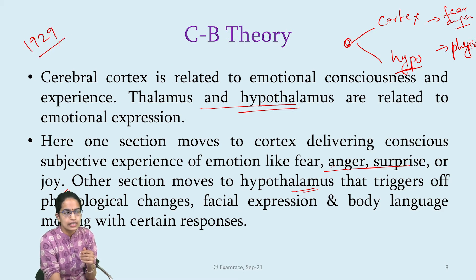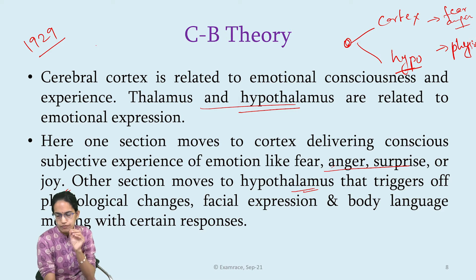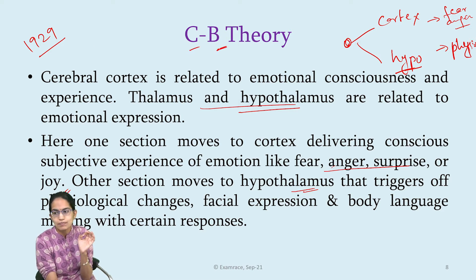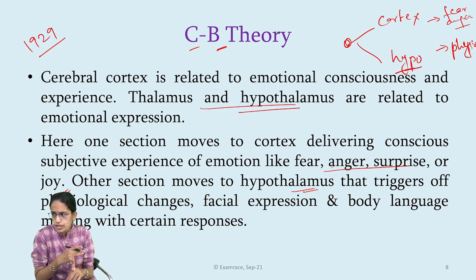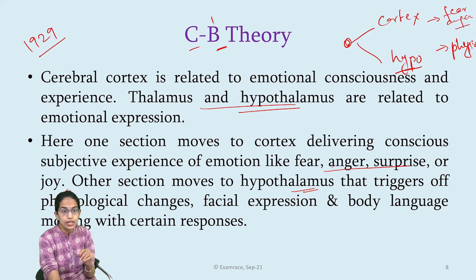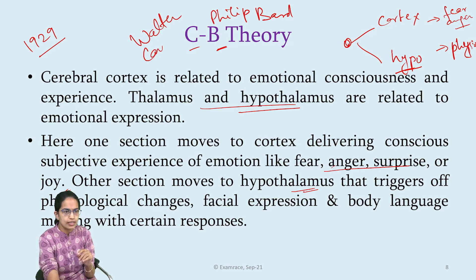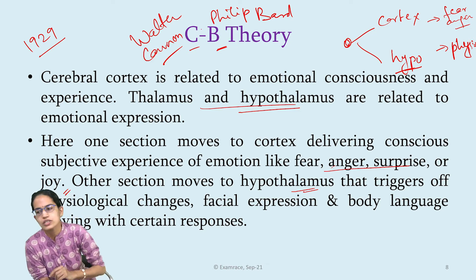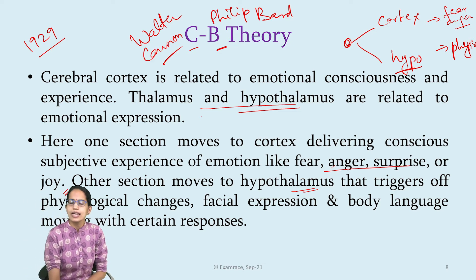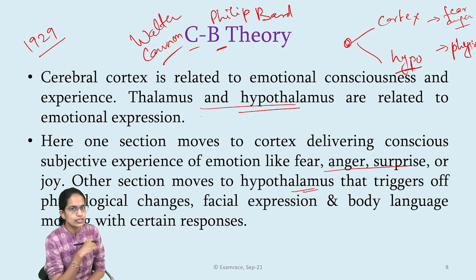In 1929, Walter Cannon proposed a theory about how emotions work, and it is called the Cannon-Bard theory. Walter Cannon, along with Philip Bard, worked on this theory, and they had some common links with James-Lange.